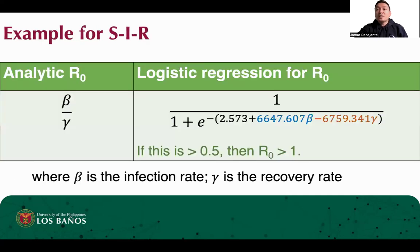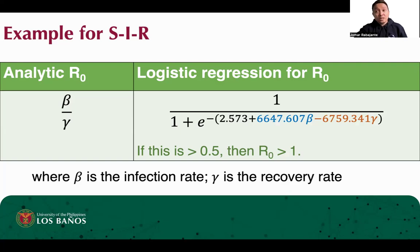For example, in a susceptible-infectious-recovered (SIR) compartmental model, we can derive a logistic regression formula that serves as a threshold to determine if a combination of parameter values will lead to an outbreak or not. When the logistic regression formula yields values greater than 0.5, then R0 is greater than 1, which means an outbreak will occur.